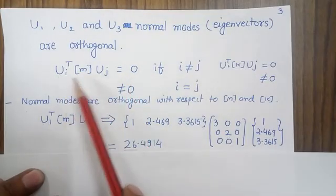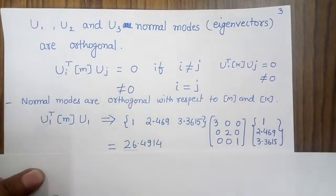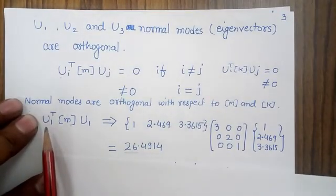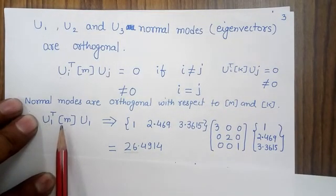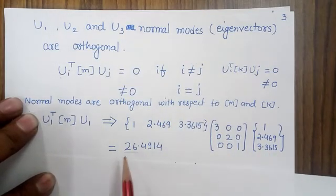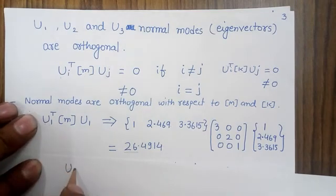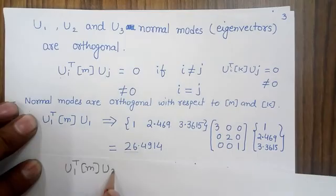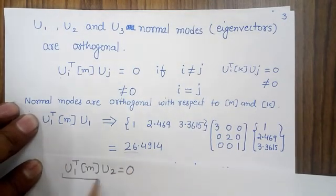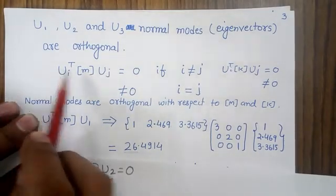If i equals j, I get a non-zero value. For example, if I multiply the transpose of the first mode with the mass matrix and again with the first mode, I get 26.49. On the other hand, if I multiply the transpose of the first mode with the second mode, I get a zero value. This property shows that the normal modes are orthogonal.